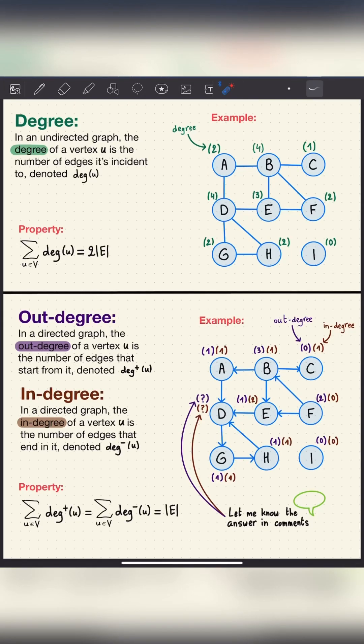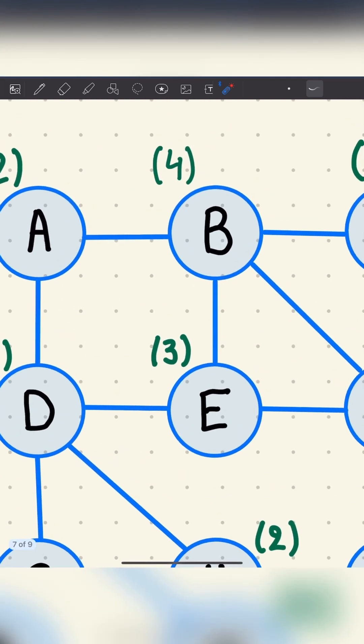The difference between degree, outdegree, and indegree. In an undirected graph, the degree of a vertex u is the number of edges it's incident to, denoted deg(u).